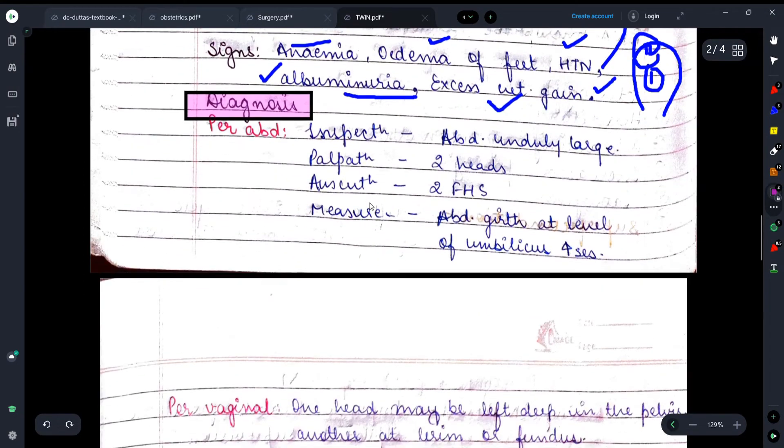First of all, when we do per abdomen examination of the female, the abdomen will be unduly enlarged, which I don't need to explain. On palpation we will get two heads. On fetal auscultation we will hear two heart sounds because there are two separate fetuses, we will observe different heart sounds.